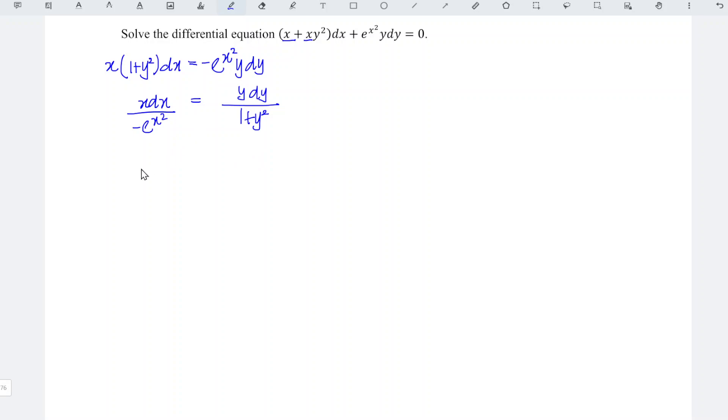Rewrite again. So we have x minus e to the power of negative x square. Since this is denominator, so to the power of negative. dx is equal to y over 1 plus y square, dy.